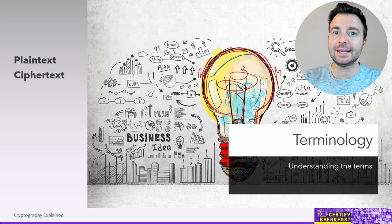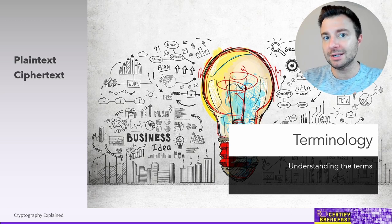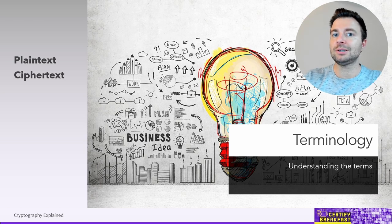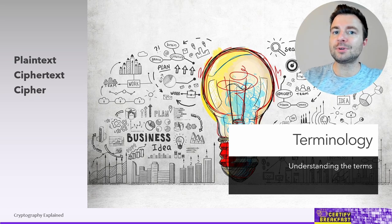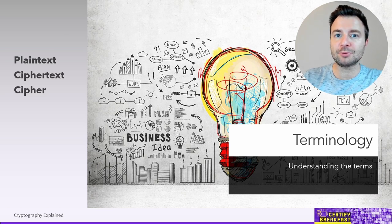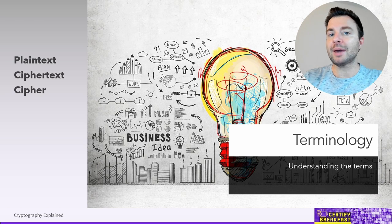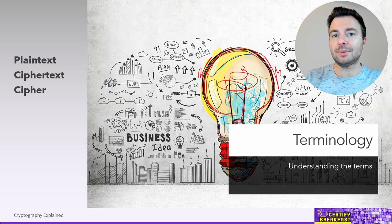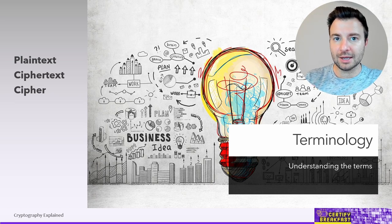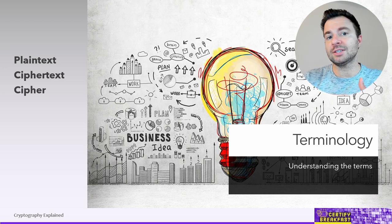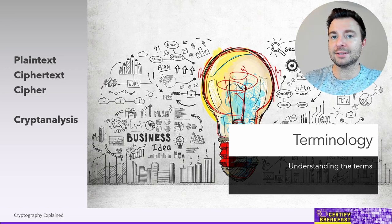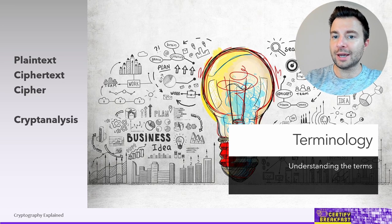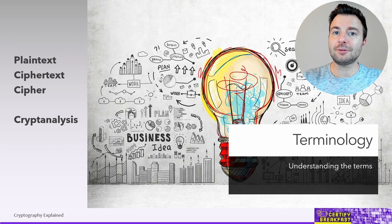Next we have ciphertext, which refers to the encrypted version of the same plaintext. This one cannot be read by anyone except for the people who have the decryption key. Then we have the cipher — the algorithm used to perform the encryption operation. A different version of the same algorithm is used to perform decryption from ciphertext back to plaintext. In most situations, data needs to be decrypted first before it can be used by users, applications, or devices. We can only work with plaintext; we cannot work with ciphertext. But we can store and transmit ciphertext to protect information. Finally, we have cryptanalysis — the process of analyzing encrypted data and trying to decode it, break the encryption cipher, or the encryption key. It's a way to reverse-engineer the encryption process.